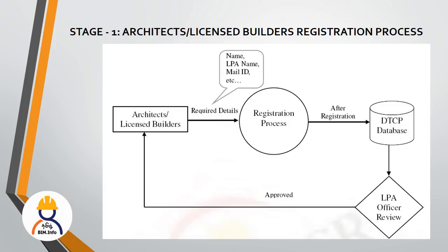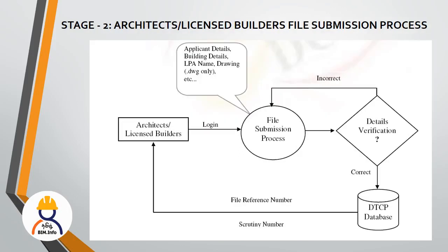In the second part, the application details, building details, LPA name, and drawing are entered. LPA name refers to the region. Building details include building area, plot number, and survey number. If you enter the application details incorrectly, there is a verification step - if you have a wrong plot number or building register number, you will receive a warning. After correction, you will receive a reference number in the DTCP database. The reference number is confirmed with an OTP or promo code. This is the second process.